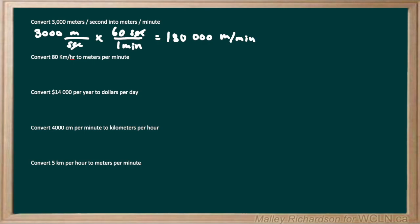The next question wants us to convert 80 kilometers per hour to meters per minute. We're going to first write our number — 80 kilometers per hour — and we want to turn it into meters per minute. So we need to change both the kilometers and the hours. First let's deal with the kilometers. We know there are 1,000 meters in one kilometer, so we write one kilometer on the bottom and 1,000 meters on top, and these kilometer units cancel out.